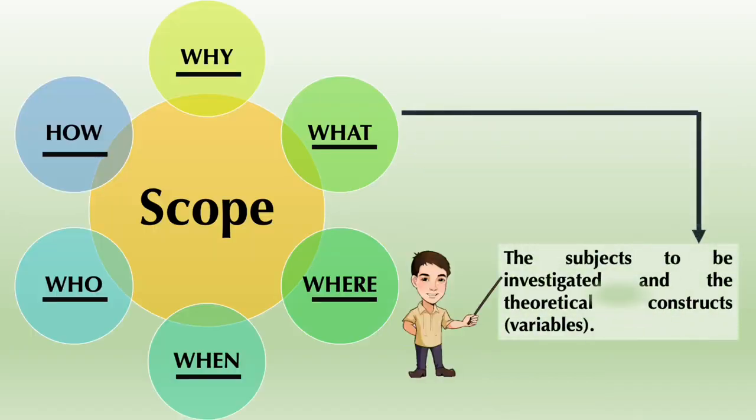The second W is what. Your scope needs to answer the subjects to be investigated and the theoretical constructs or the variables that will be included in the study.